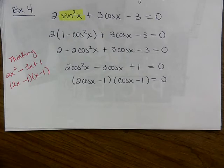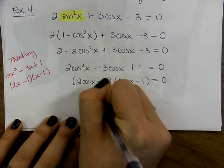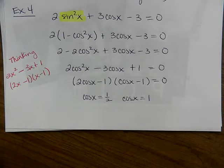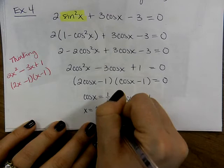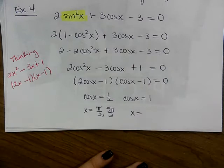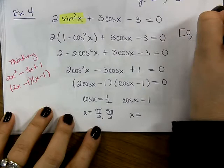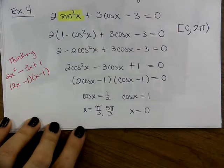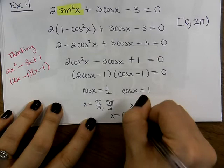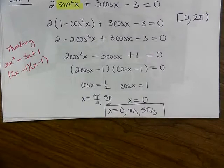This factors like 2x² − 3x + 1 = (2x − 1)(x − 1). Replacing x with cosine: (2cos(x) − 1)(cos(x) − 1) = 0. Zero product property gives cos(x) = 1/2 and cos(x) = 1. For cos(x) = 1/2: x = π/3 and 5π/3. For cos(x) = 1: x = 0 or 2π, but we write 0 due to the restriction. Final answer: x = 0, π/3, 5π/3.